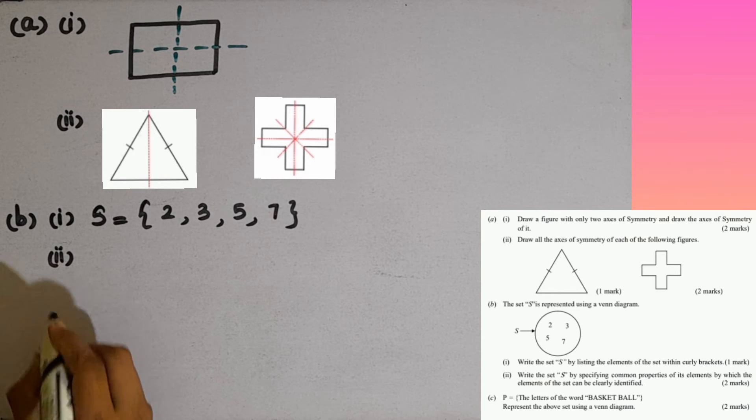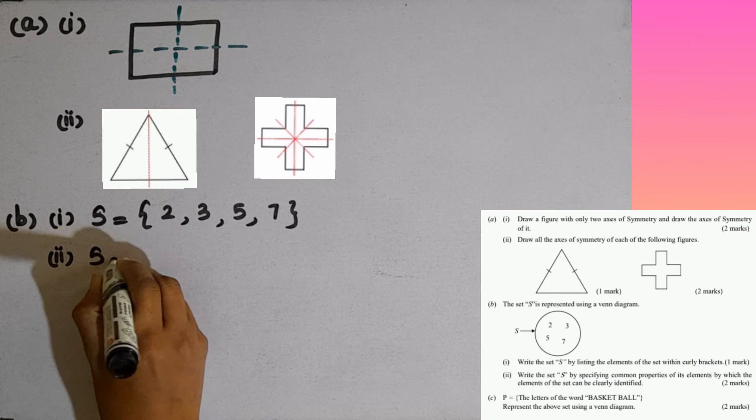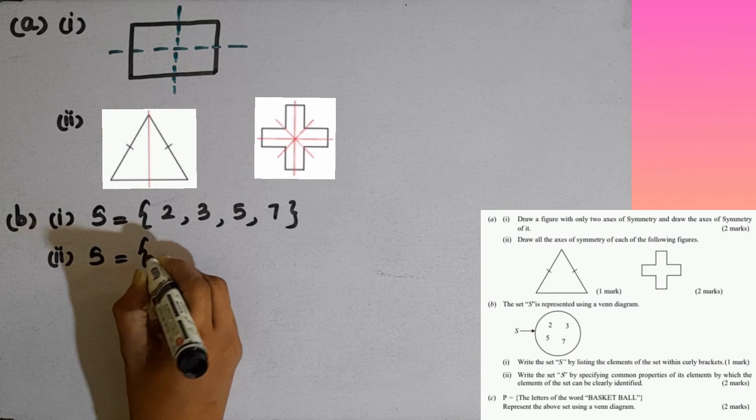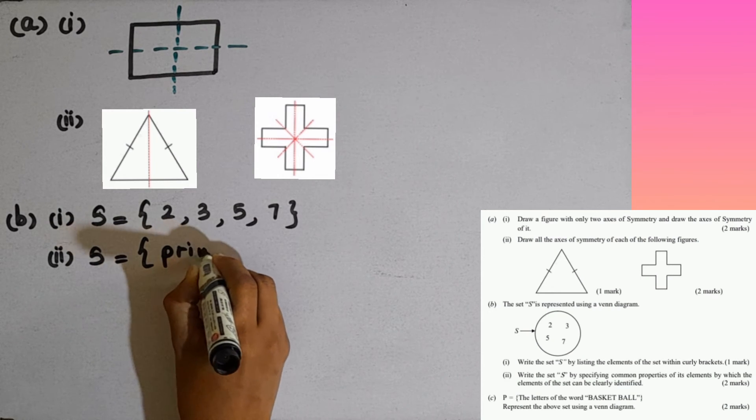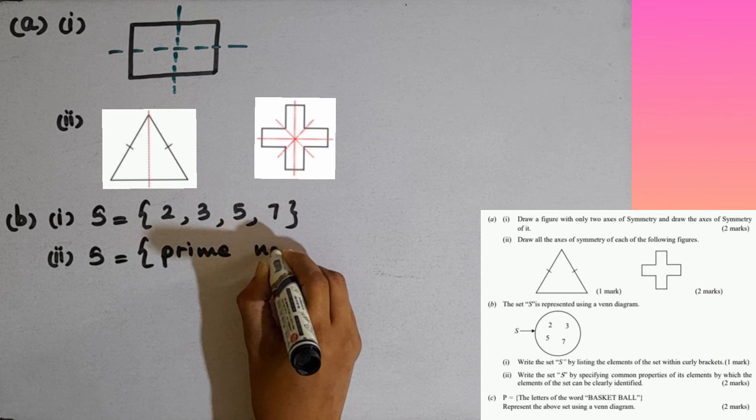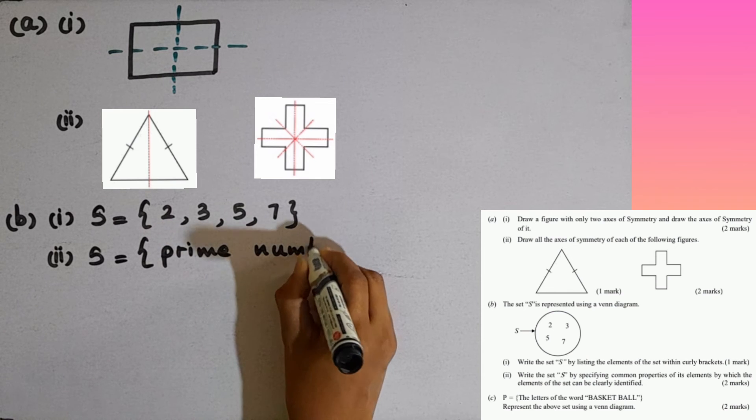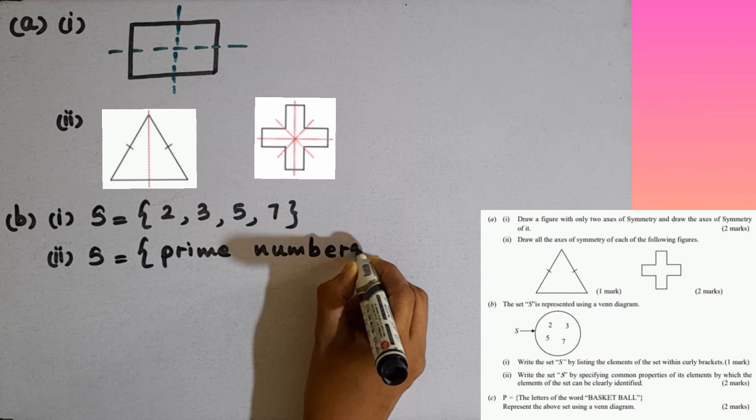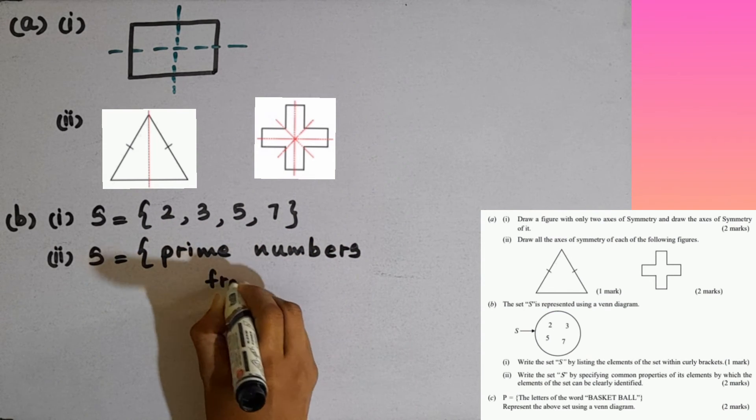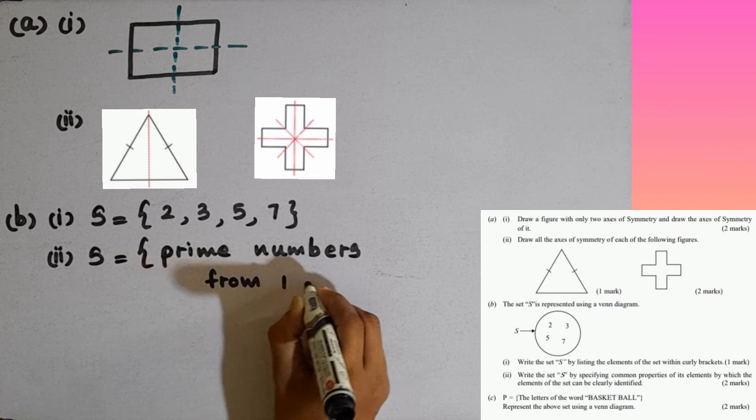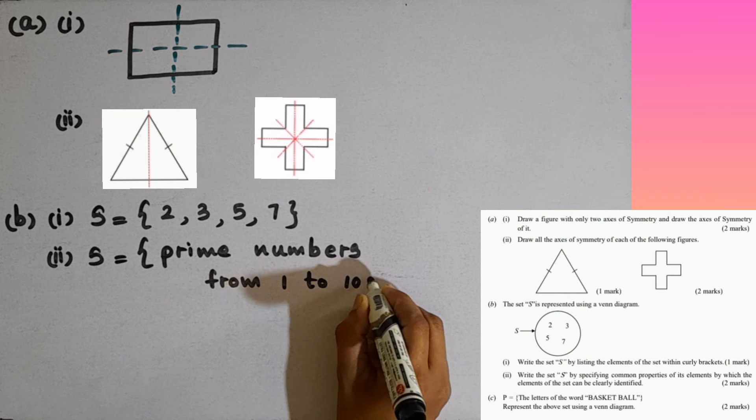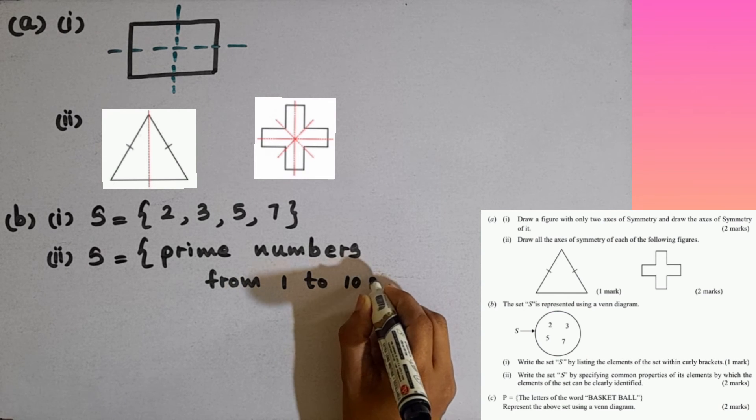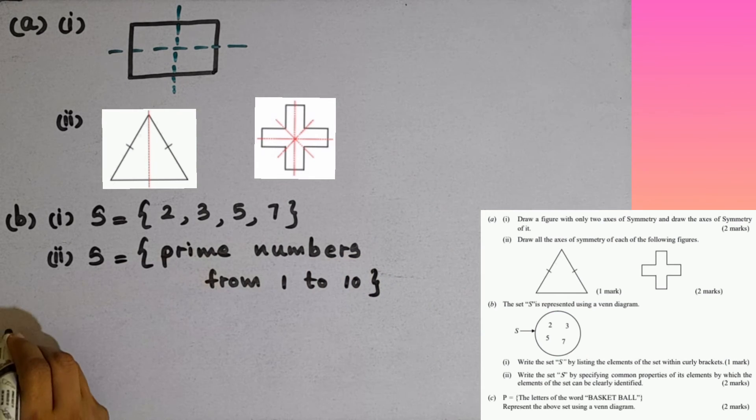You can take both. So we have to write it as equal to prime numbers from 1 to 10. Then C part.